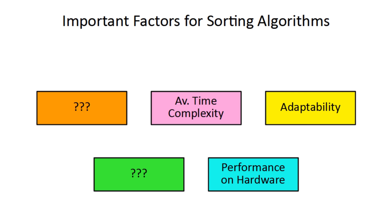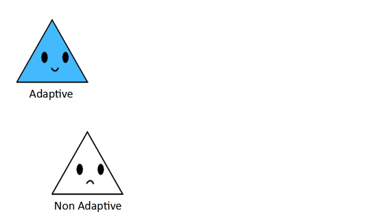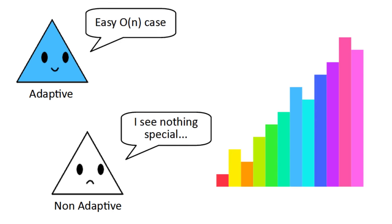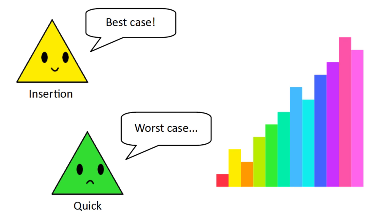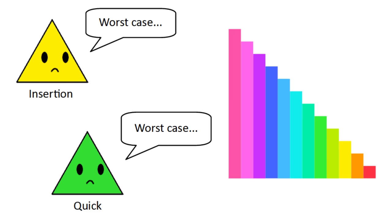The second factor is adaptability. An adaptive sorting algorithm is one that can take advantage of existing patterns in the list. These occur all the time in real data, and can cause best cases and worst cases. For example, a roughly sorted list is great for insertion sort, but bad for quicksort. A backwards list is bad for both of them, but great for pancakesort.